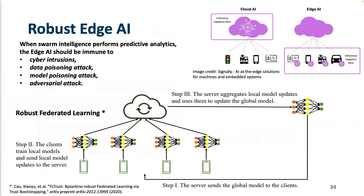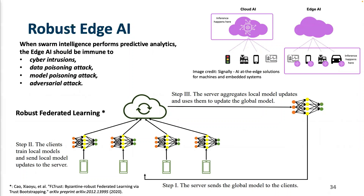Ultimately, the goal is to see all of this in the edge AI. We want machine learning and AI deployed in edge computing environments to be immune to data poisoning attacks, model poisoning attacks, and adversarial attacks. That is the ultimate goal.